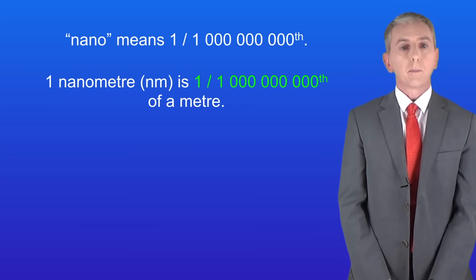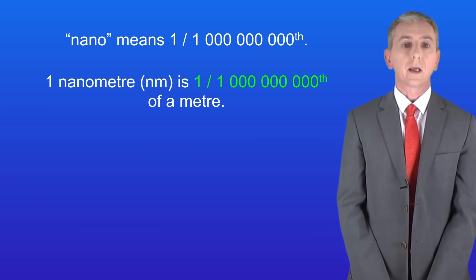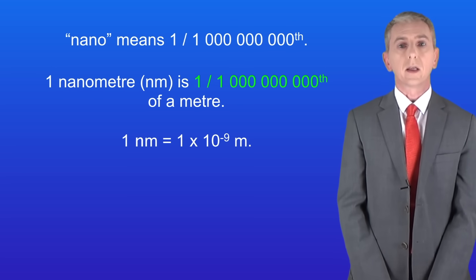The word nano means one billionth so one nanometer is one billionth of a meter. In standard form a nanometer is one times ten to the power of minus nine meters. A nanometer is a very small size.